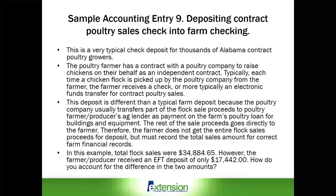This is a very typical check for thousands of Alabama contract poultry growers. The poultry farmer has a contract with a poultry company to raise chickens on their behalf as an independent contractor. Typically, each time a chicken flock is picked up by the poultry company, the farmer receives either a check or an electronic funds transfer. This deposit is different than a typical farm deposit because the poultry company usually transfers part of the flock sales proceeds to the farmer's ag lender as a payment on the farmer's poultry loan for buildings and equipment, while the rest goes directly to the farmer.